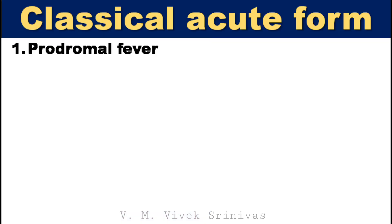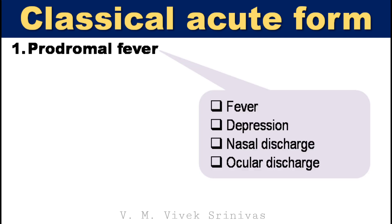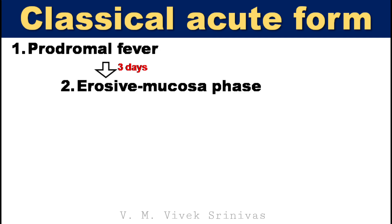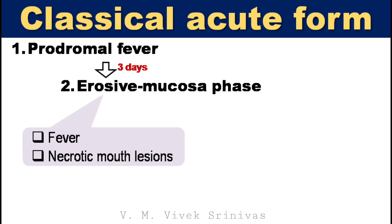In the classical acute form, first the animal will have a prodromal fever. In this phase, pyrexia, depression, and nasal and ocular discharge are noticed. After 3 days, the animal enters the erosive mucosal phase. In this phase, increased body temperature at its peak and oral stomatitis — that is, necrotic mouth lesions — are observed.